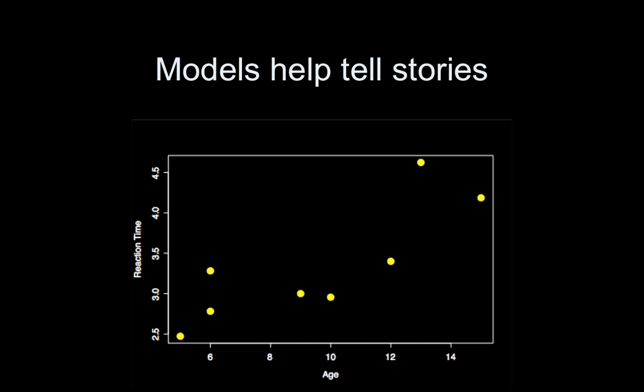Okay so where were we? We were talking about how models help us tell stories. So here we have these data where we have age on the x-axis and reaction time on the y-axis, and it appears that as age increases reaction time is also increasing. So we are going to fit a line through the data and a line is exactly what simple linear regression is.